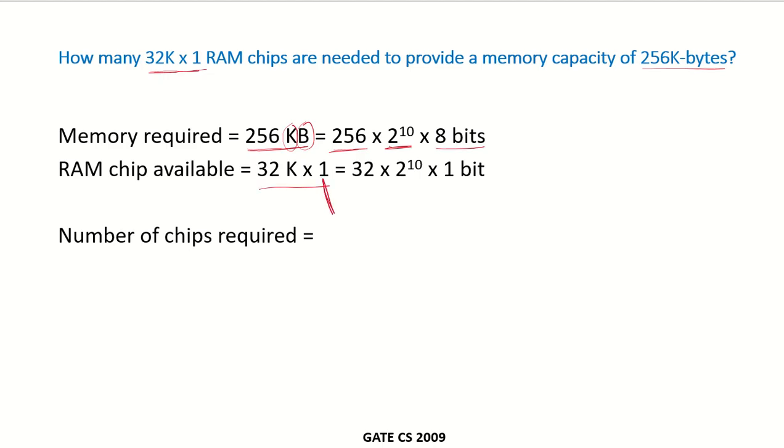Now this stands for the number of bits in each row. We have 32K by 1 RAM chips which are available. Again, 32K is 2 to the power of 10 into 1 bit. How many memory chips would be required to produce the memory of the required capacity? We simply have to divide this by this.